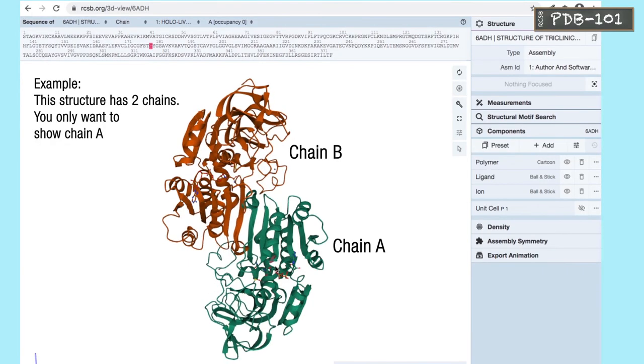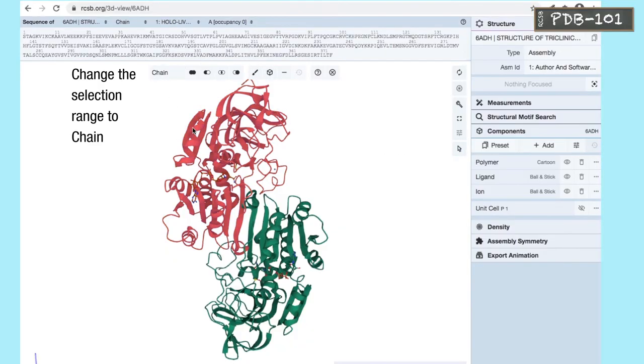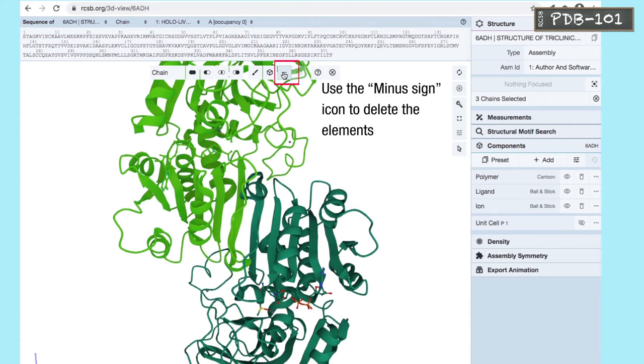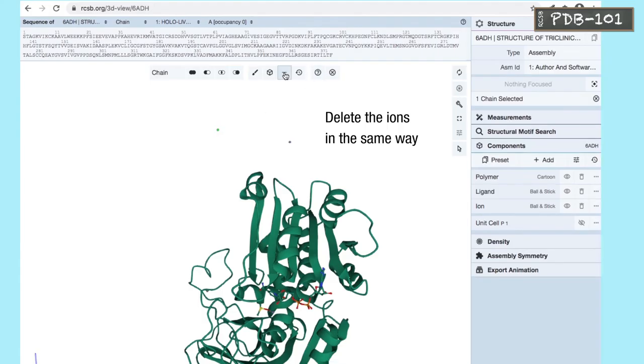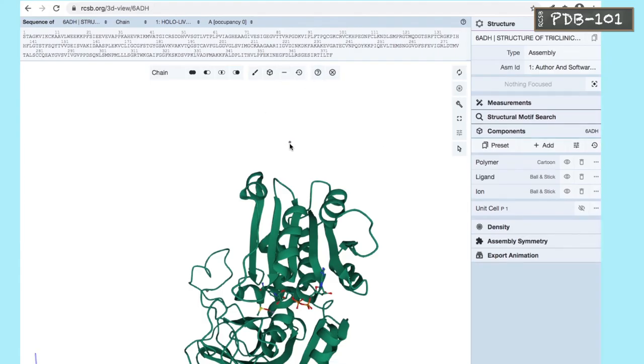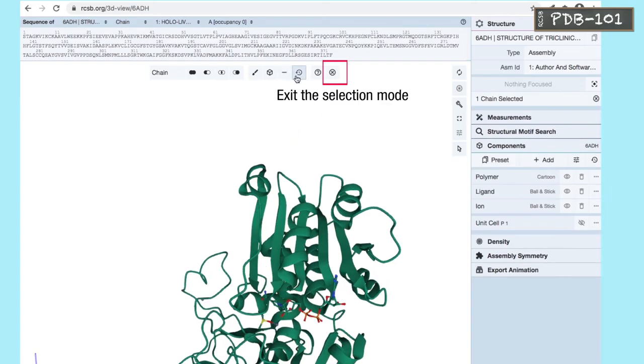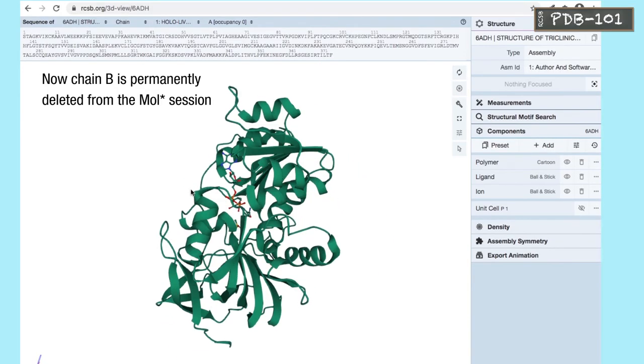This structure has two chains. You only want to show chain A. Enter the selection mode. Change the selection range to chain. In the viewport, select all elements you want to delete. Use the minus sign icon to delete the elements. Delete the ions in the same way. Exit the selection mode. Now, chain B is permanently deleted from the Molstar session.